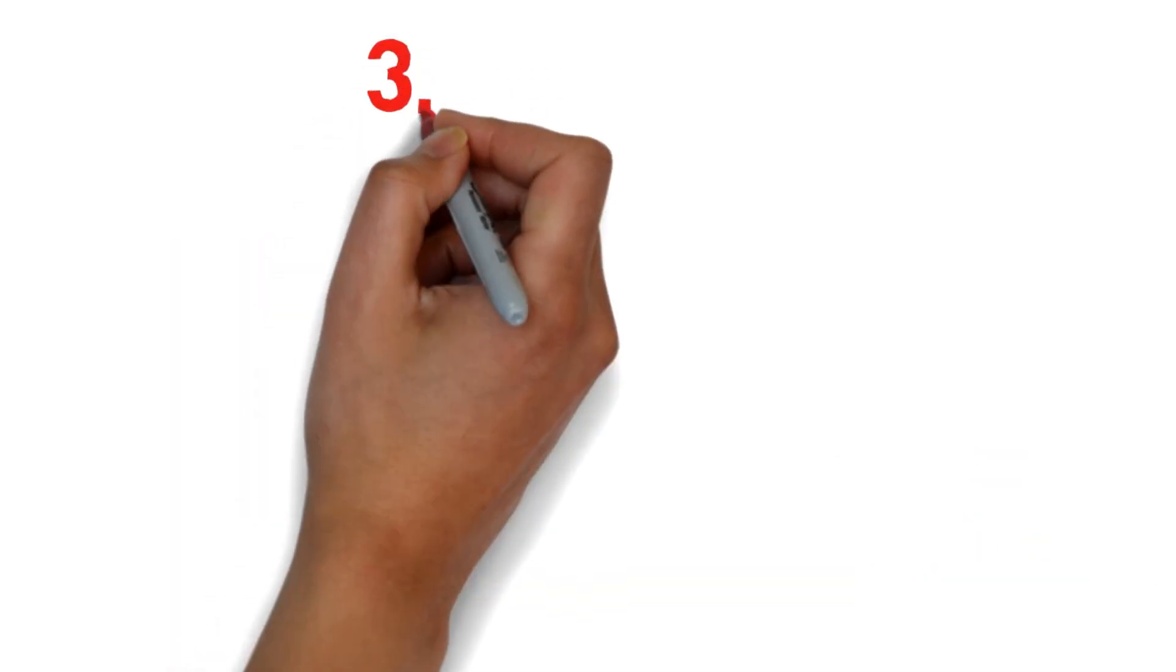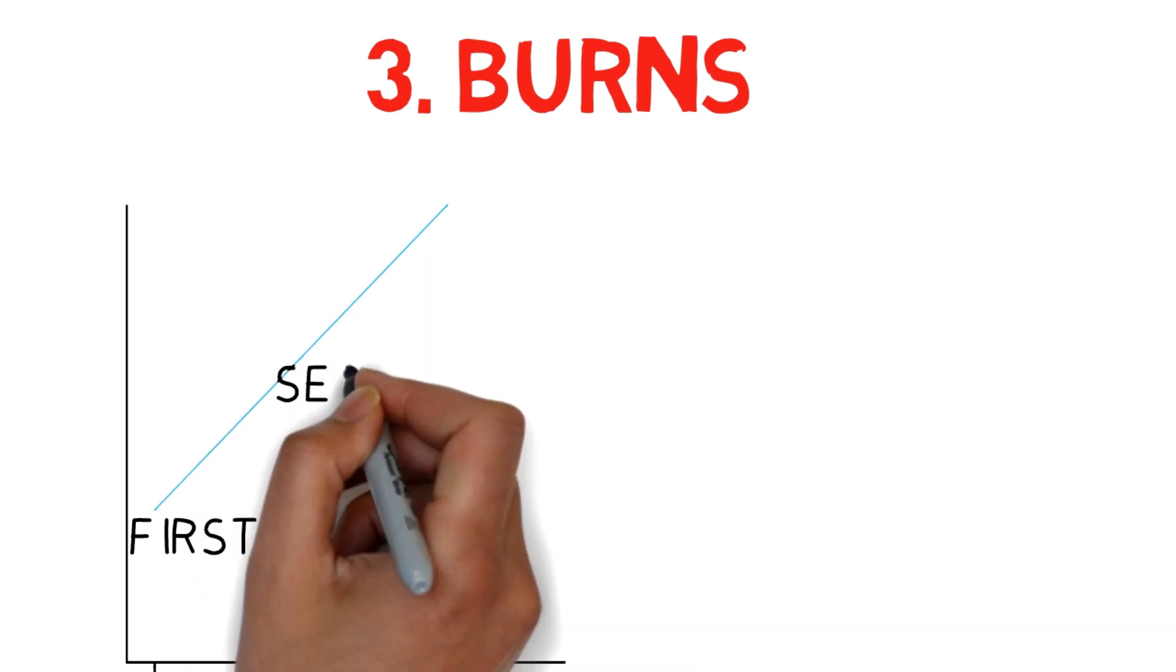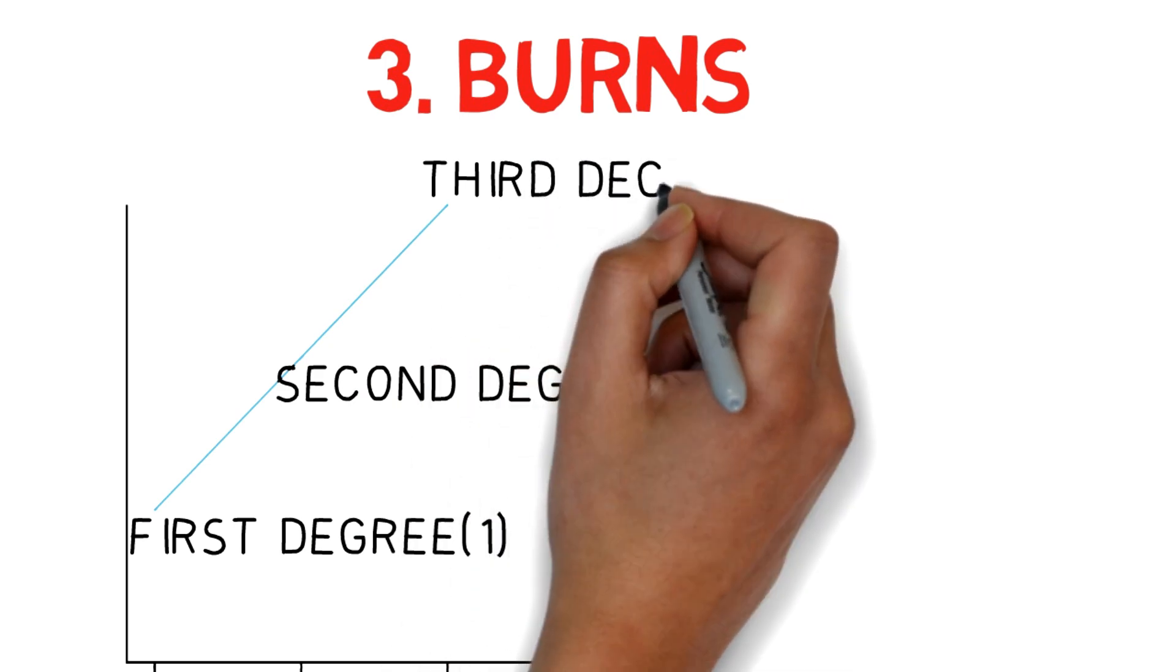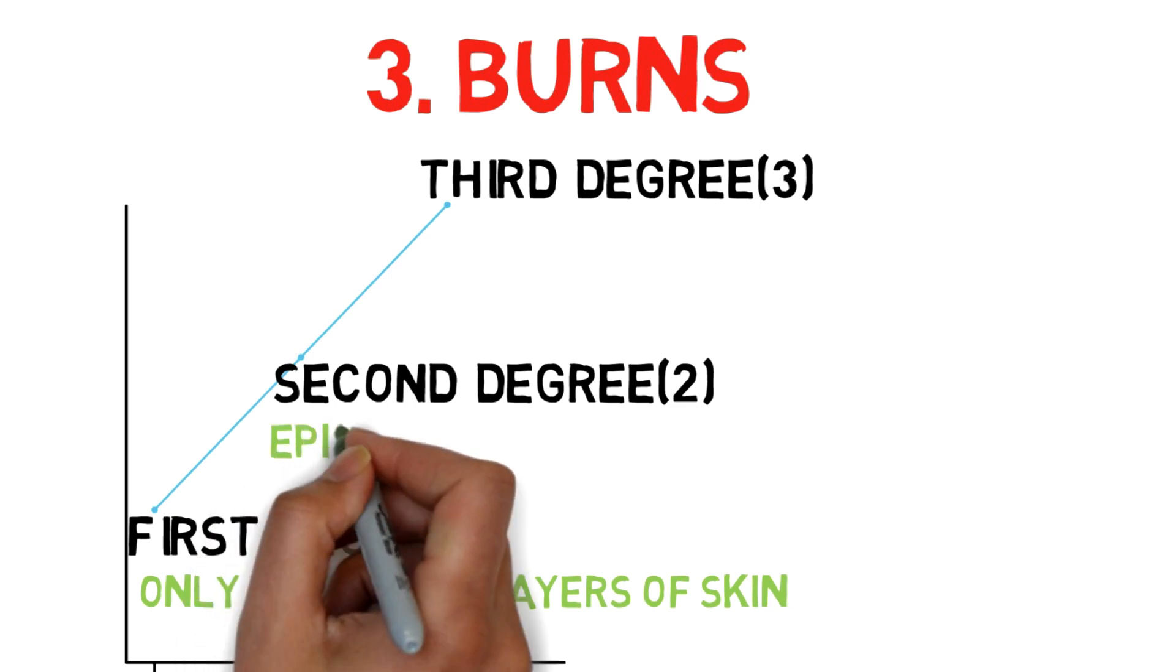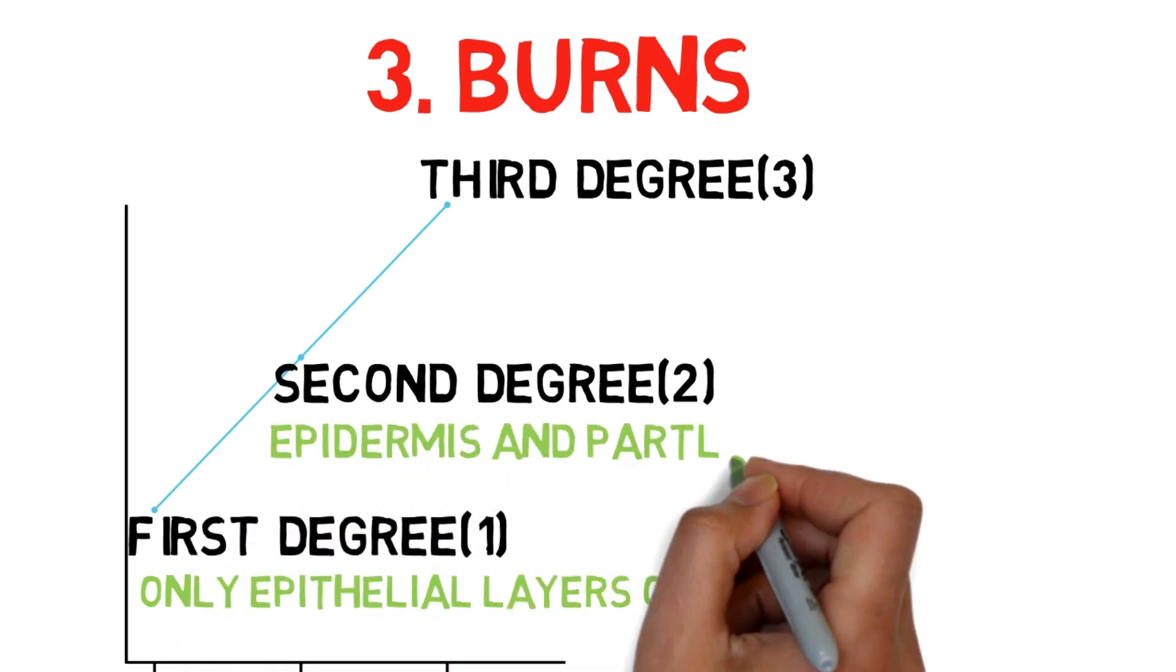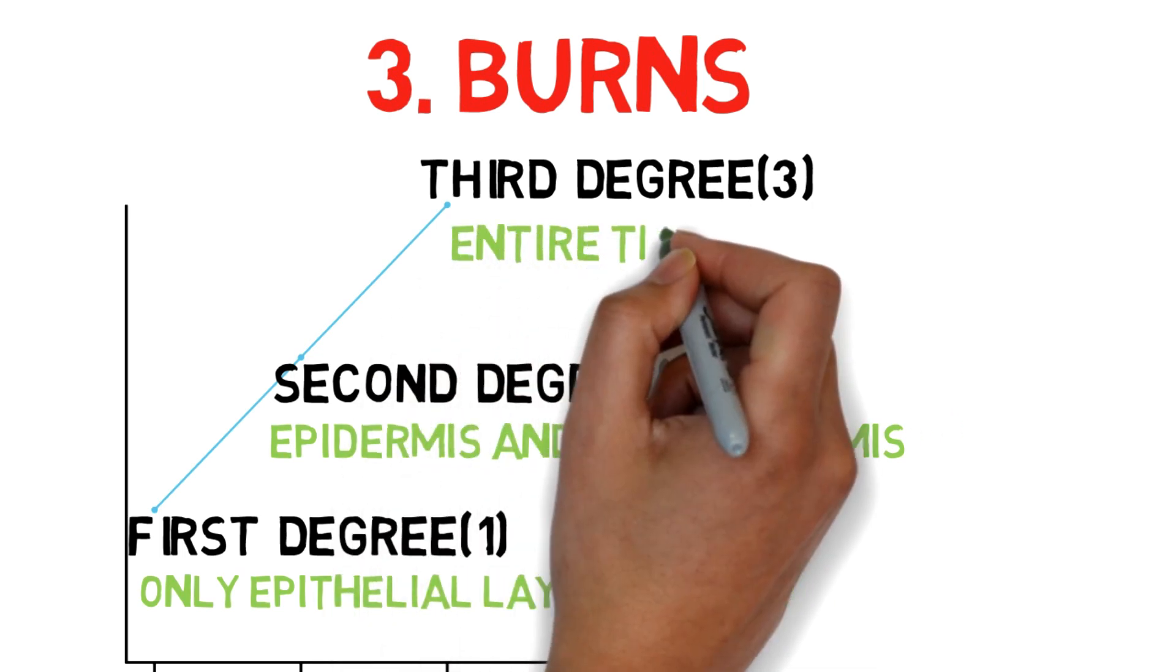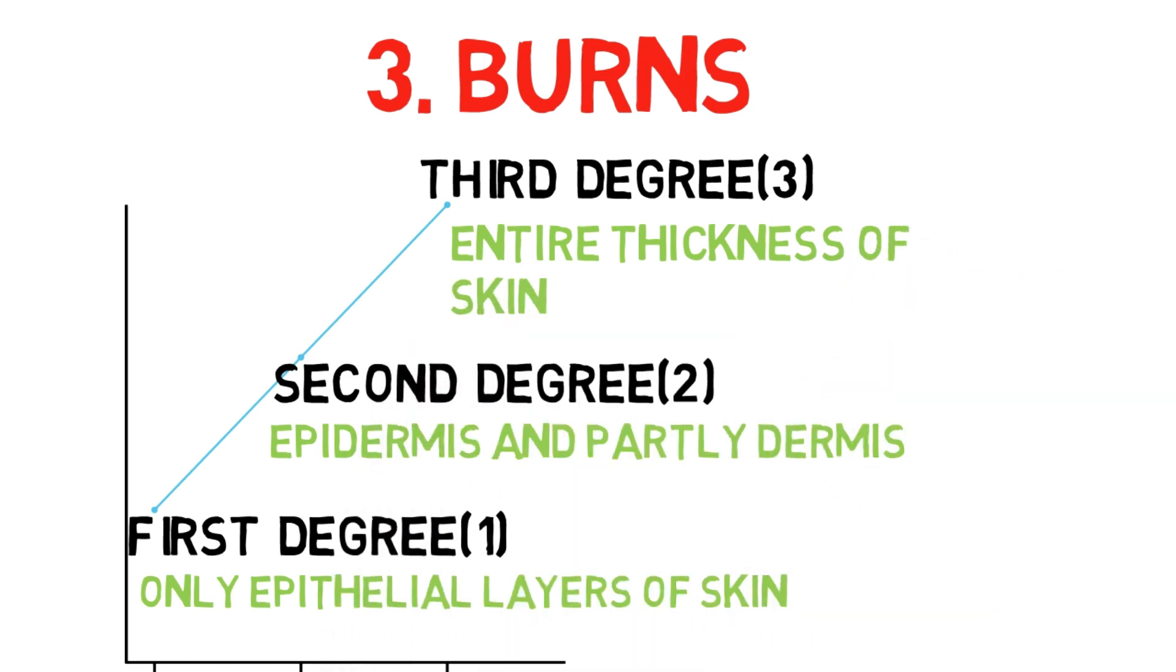Our next question is: why is skin grafting necessary in third degree burns but not in second degree burns? Burns are classified as first degree, second degree, and third degree based on their severity. First degree burns involve the burning of epithelial layers of the skin. Second degree burns involve both epidermis and slightly a bit of dermis. In third degree burns, the entire thickness of the skin—dermis and epidermis—is involved, and frequently some underlying muscles are also harmed.